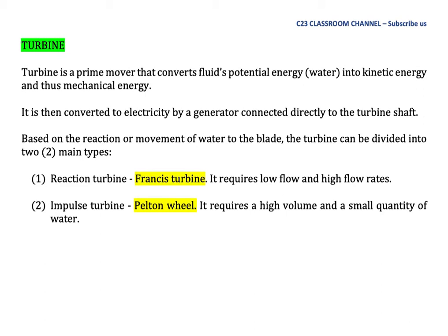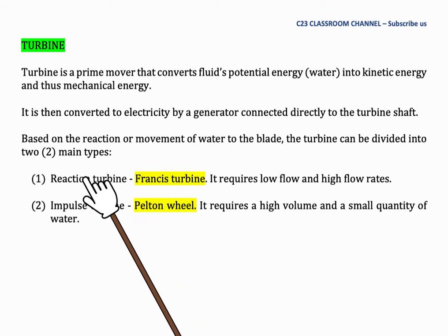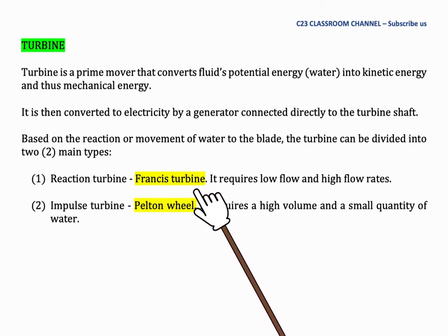Based on the reaction of movement of water to the blade, the turbine can be divided into two main types. One is the Reaction Turbine. The example of a Reaction Turbine is the Francis Turbine.